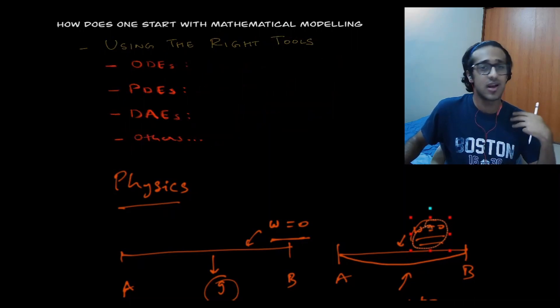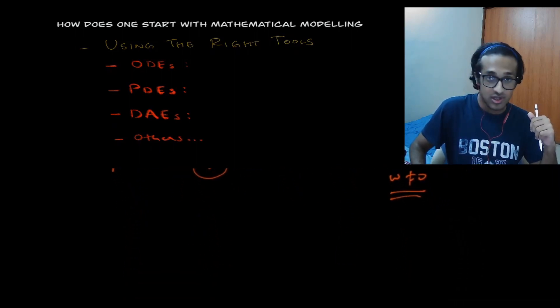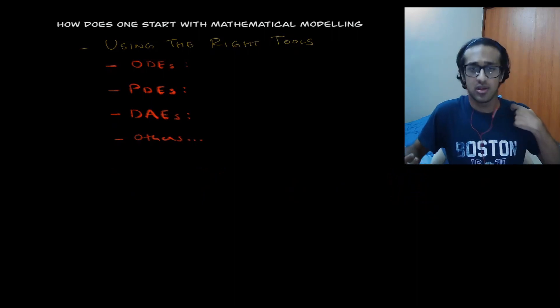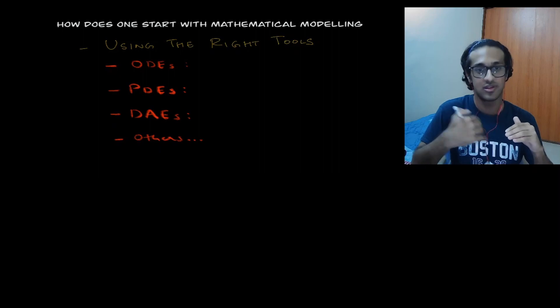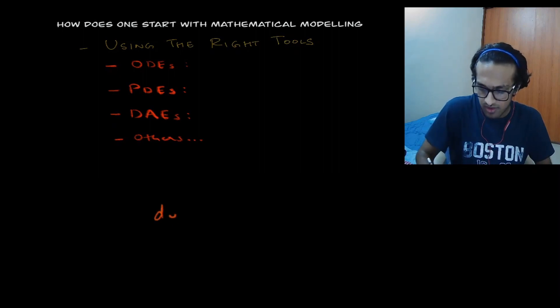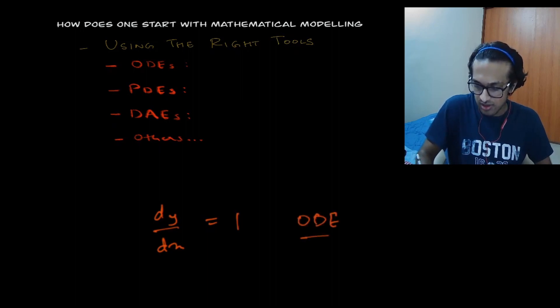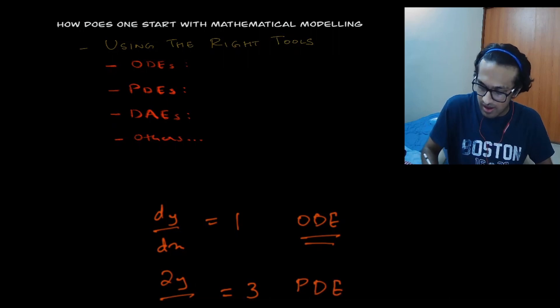Now, the third thing is to use the right tools in modeling. So there are a bunch of tools like ordinary differential equations, partial differential equations, differential algebraic equations, and many other tools. And if you don't know what any of these things mean, don't worry, I'm going to be dealing with these things in detail in the lectures to come. But just to give you an example, so dy by dx equal to one is an ODE. It's an ordinary differential equation. If I have dou y by dou x equal to say three, that's a partial differential equation. If I have an ODE and an algebraic equation, say x is equal to five. So this is an algebraic equation. So these two together.